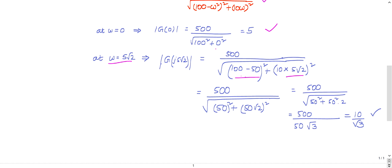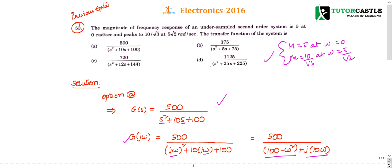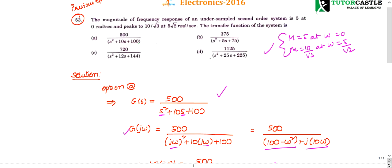Just simply calculate by substituting omega equal to 5 root 2 and make the calculation. You'll get it as 10 by root 3. So directly, option A is the right choice. No need to verify remaining options.